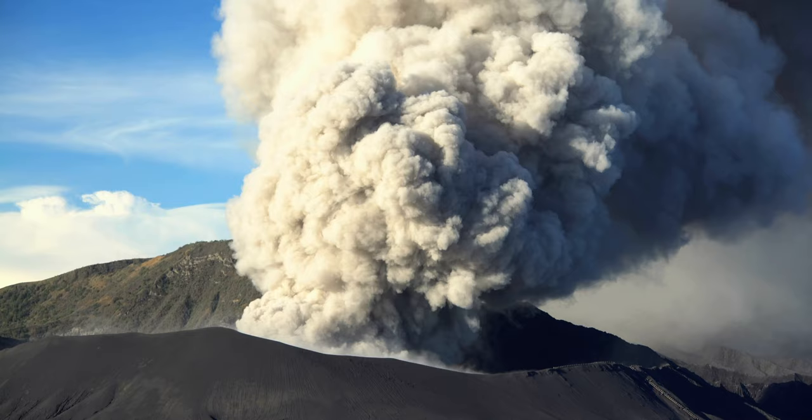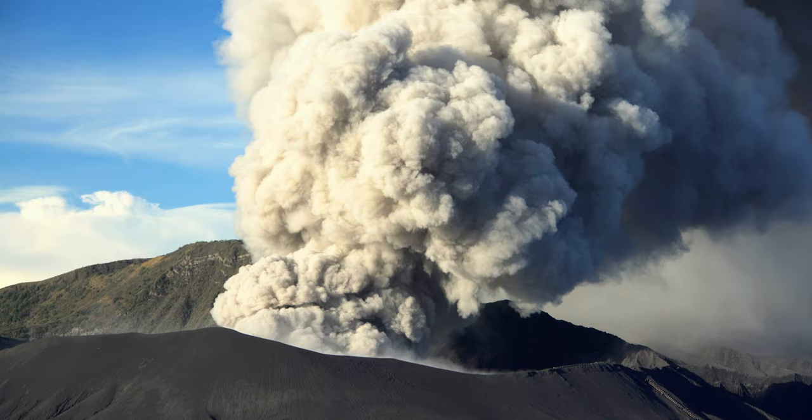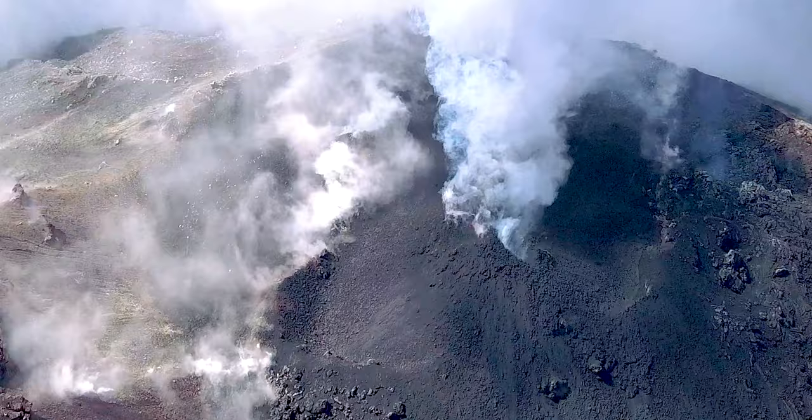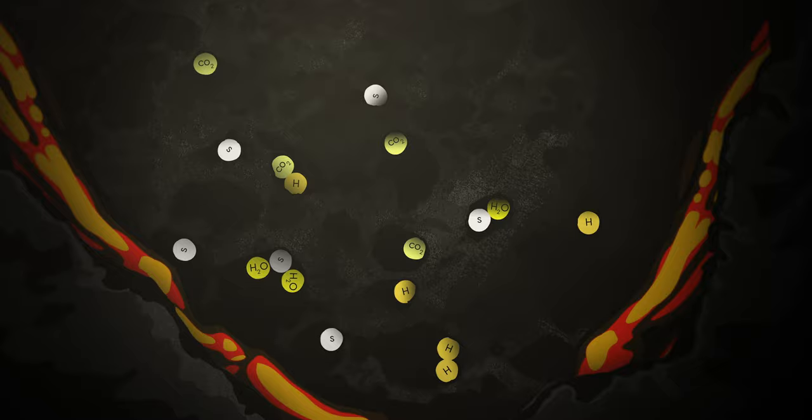My particular focus is on what we call volatile elements. So everything that you might find in a gas plume coming out the top of a volcano before it leaves the volcano, it's inside the rocks. And these are things that turn into gas when they reach the surface.